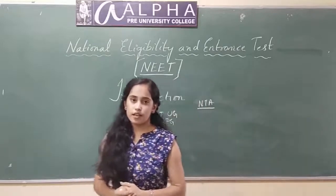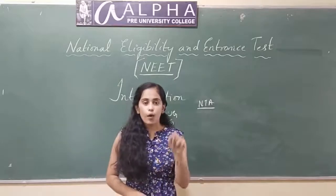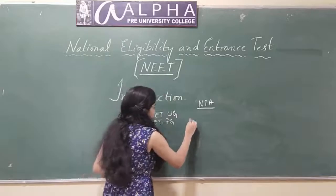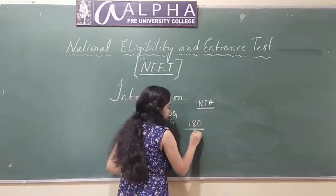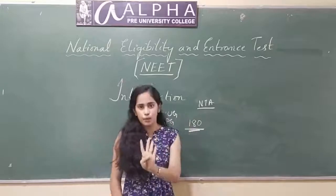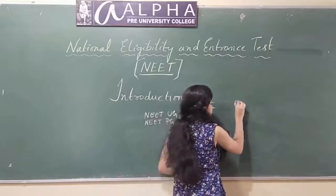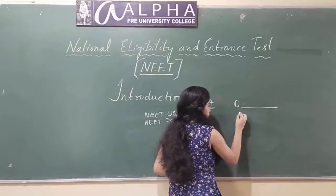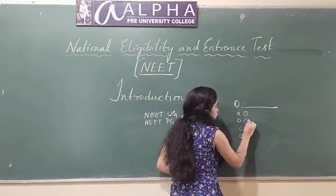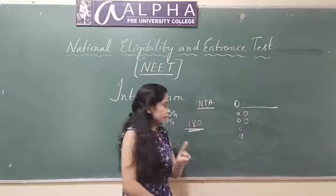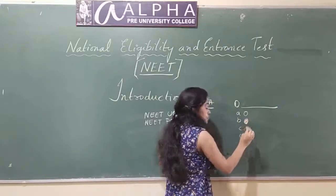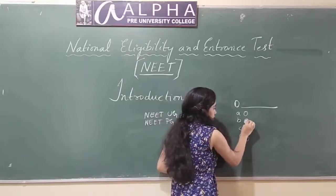Coming to the pattern of NEET — in NEET there are 180 objective type questions, each with 4 options: A, B, C, D. You will be provided an OMR sheet and you must mark one right answer.